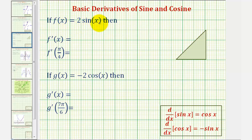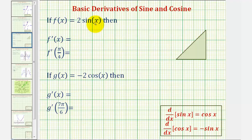If cosine x equals two sine x, we want to find f prime of x and f prime of pi over four. Since the derivative of sine x with respect to x is equal to cosine x, the derivative of two sine x would be two cosine x.